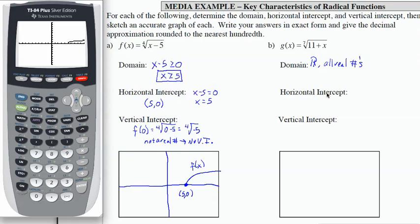To find the horizontal intercept, again, I take what's under the radical and set it equal to 0. If I subtract 11 from both sides, I get x equals negative 11. That means my horizontal intercept as an ordered pair is negative 11, 0.